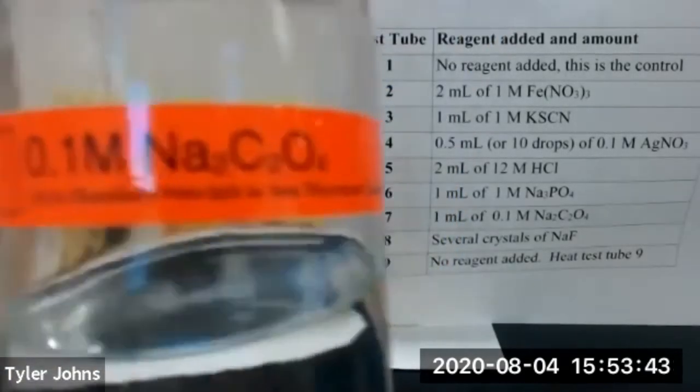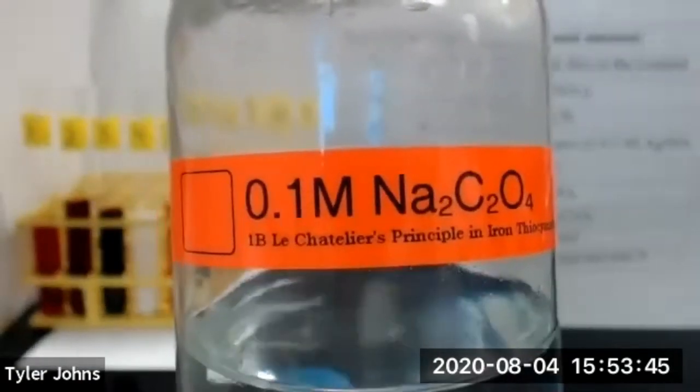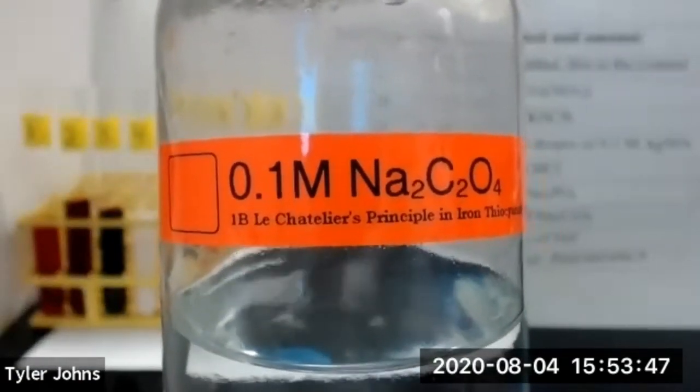We'll next add one milliliter of 0.1 molar sodium oxalate to test tube number seven.